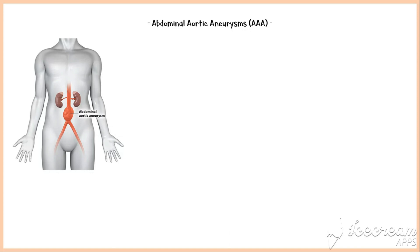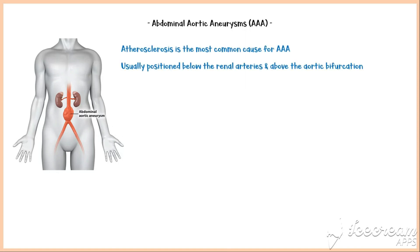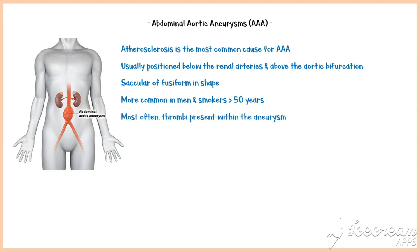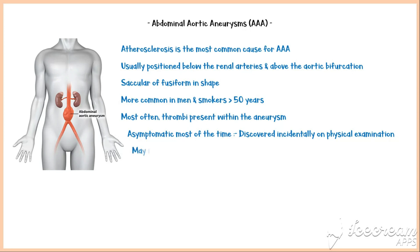Abdominal aortic aneurysms most commonly occur due to atherosclerosis. They are usually positioned below the renal arteries and above the aortic bifurcation, and are saccular or fusiform in shape. They are more common in men and smokers older than 50 years. Most often, thrombosis occurs within the aneurysm due to stasis of blood. Abdominal aortic aneurysms are asymptomatic most of the time and discovered incidentally on physical examination as a pulsating mass that may mimic a tumor.